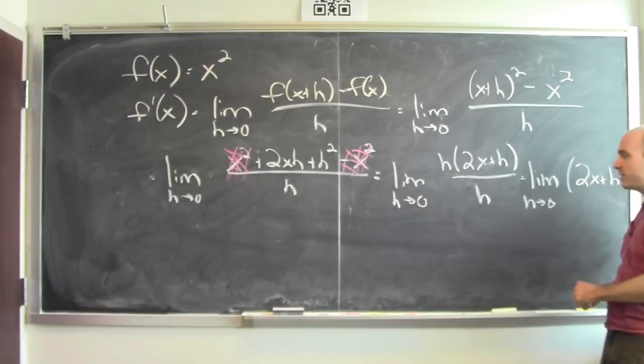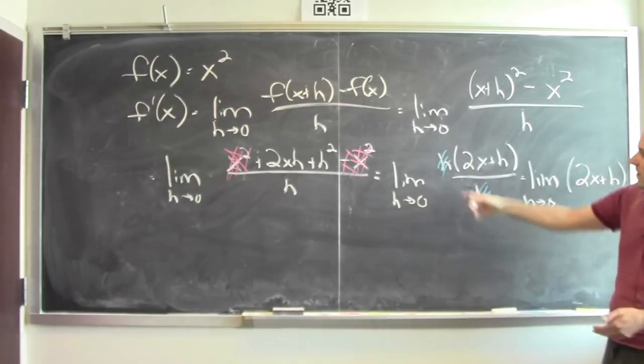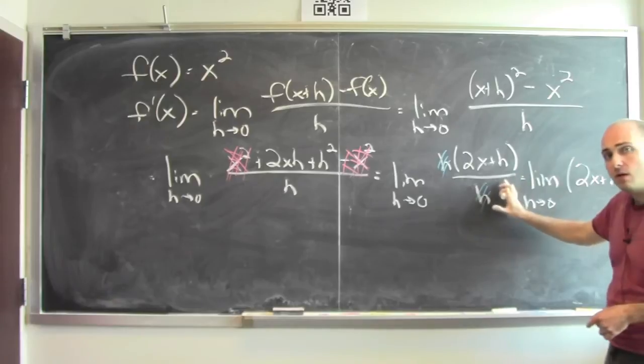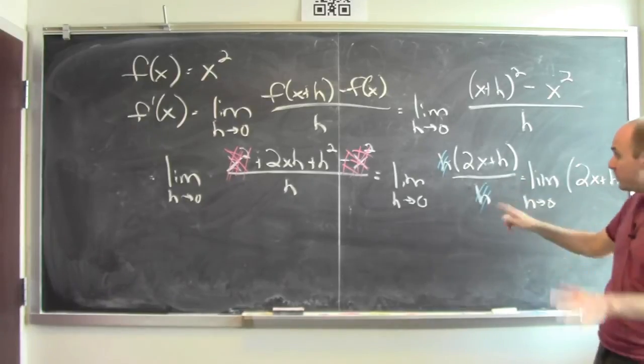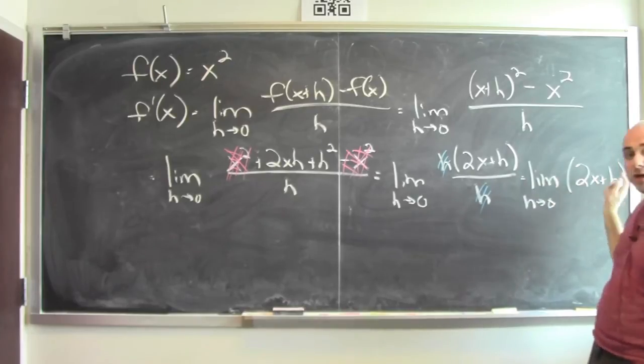Another way to see this: when people just cancel these terms, I'm going to cancel those h's. So I've got the limit as h goes to 0 of this function, which isn't defined at 0, but its values away from 0 are the same as the values of 2x + h. So it's got the same limit as just 2x + h.